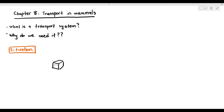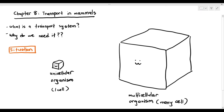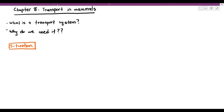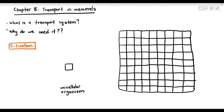Let's assume this over here is a unicellular organism — a unicellular organism is just basically made up of one cell. A multicellular organism is just basically made up of many cells. Trying to understand these organisms in a three-dimensional view can be difficult, so I'm going to represent them in a two-dimensional view instead.